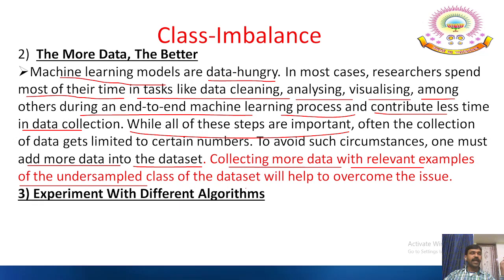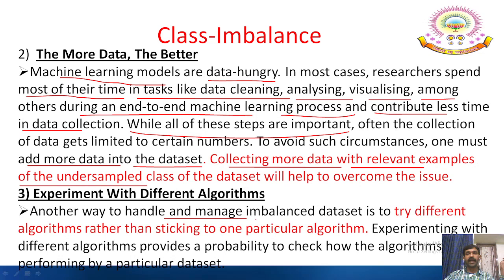The third technique is to experiment with different algorithms. Another way to handle class imbalance is to try different algorithms rather than sticking to one. We should perform the process with two or more algorithms compared to a single algorithm. Experimenting with different algorithms provides a probability to check how the algorithms are performing on a particular dataset.